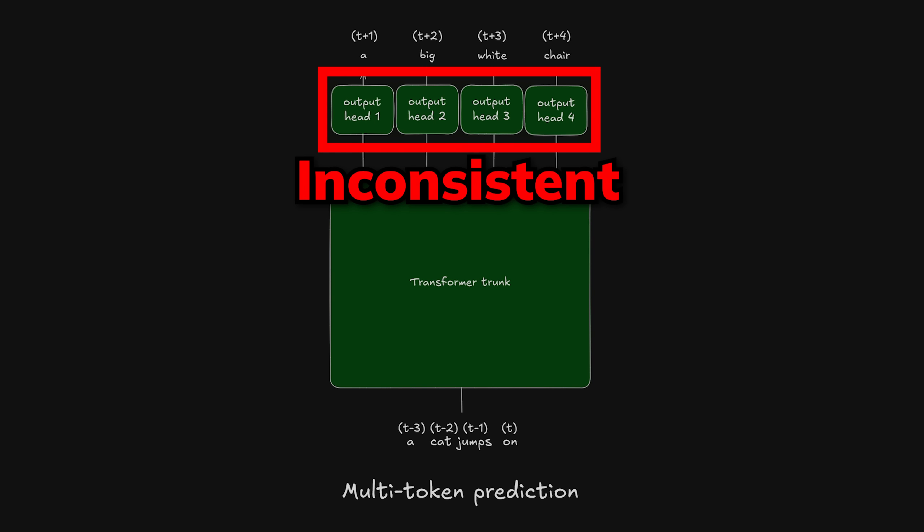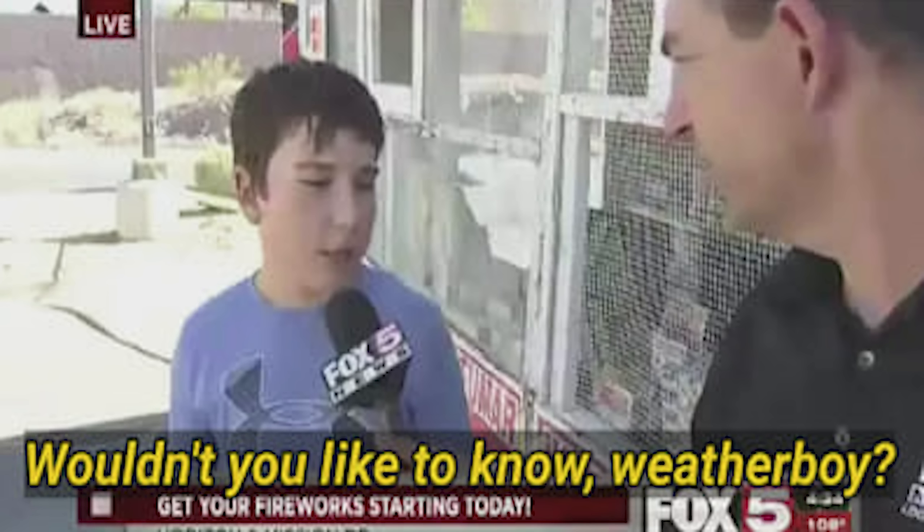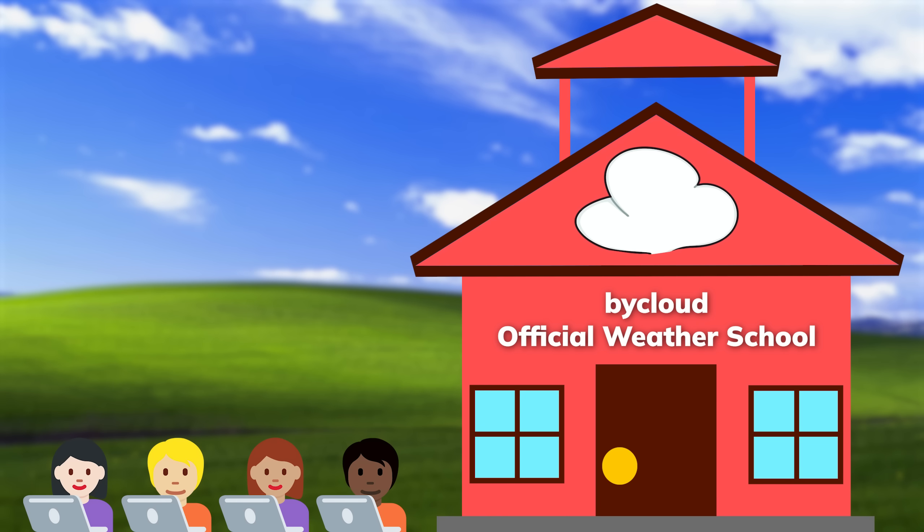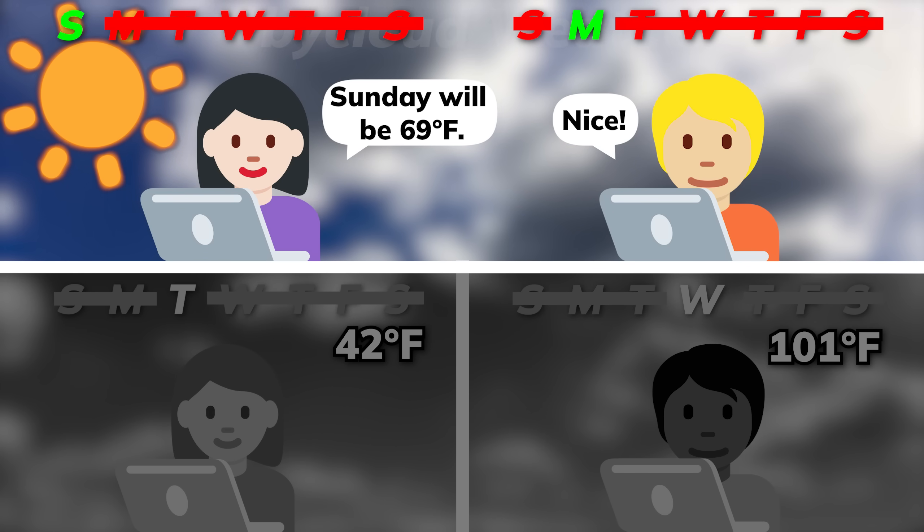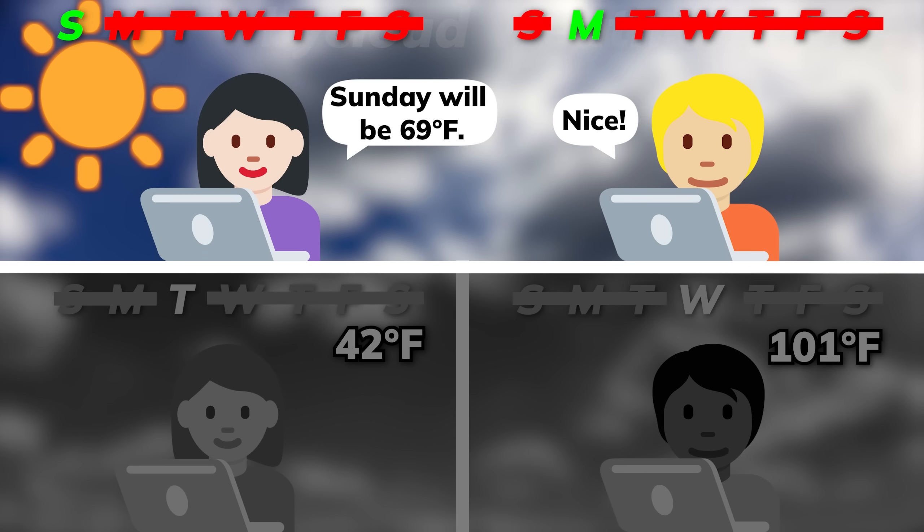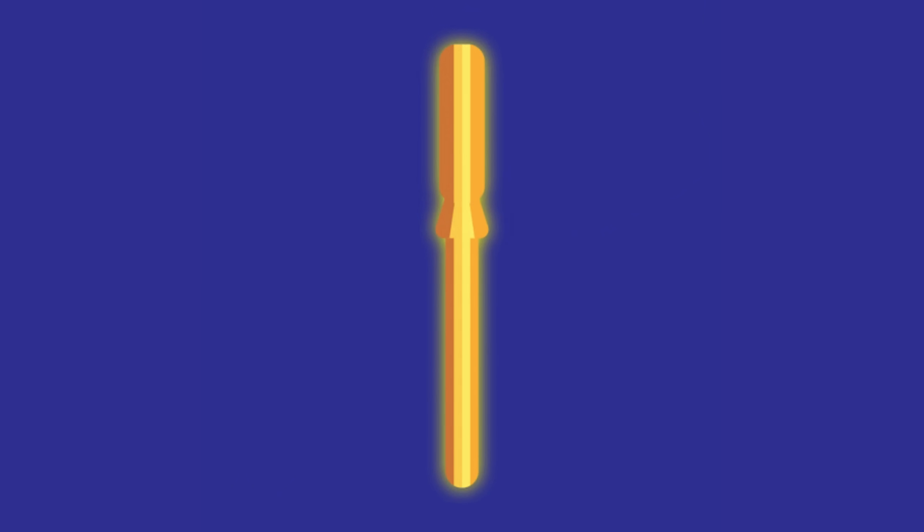Which going back to the weatherman example, means not only did they all go to the same educational system, but now, the day 2 weather guy is also able to see what the day 1 guy predicted. And the key that made everything work here is that the learning signals, aka the gradients, from the MTP module didn't only train the MTP-specific transformer blocks.